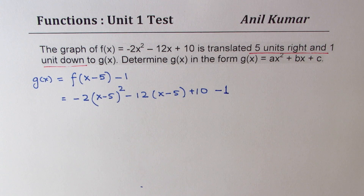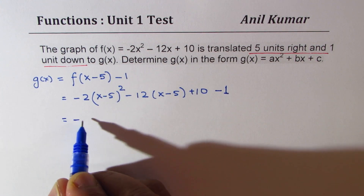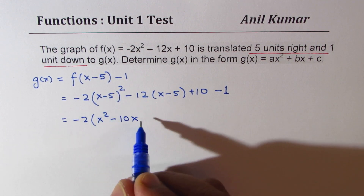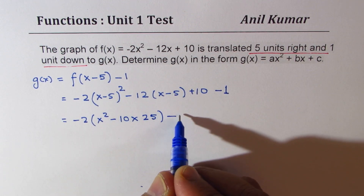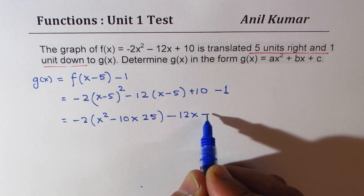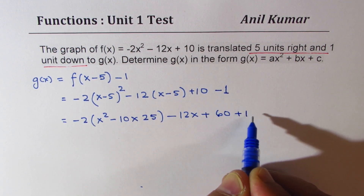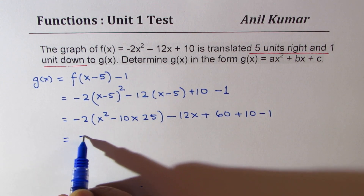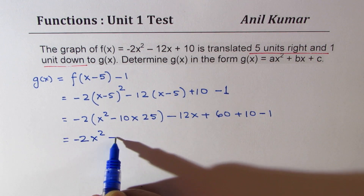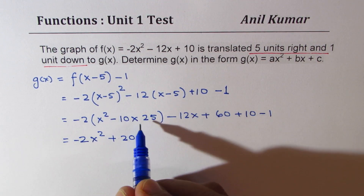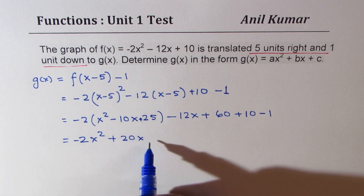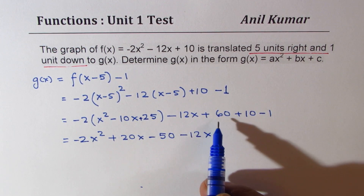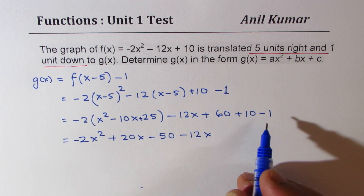That becomes g(x). Now let us expand. We get -2 times [x² - 10x + 25] minus 12(x - 5) + 10 - 1. Opening the first bracket: -2x² + 20x - 50. Opening the second bracket: -12x + 60. Then +10 - 1 gives +9. So combining constants: -50 + 60 + 10 - 1 = 19... we combine the constant terms to get 69, then subtract 50 giving 19.